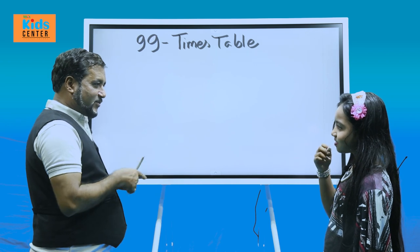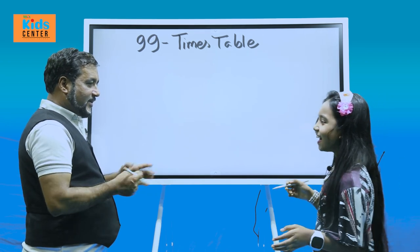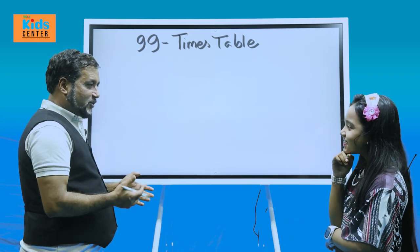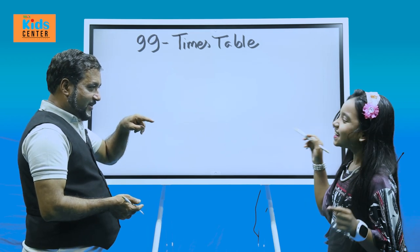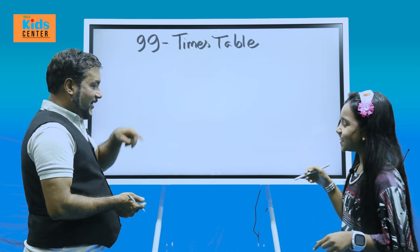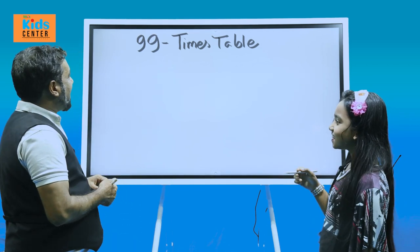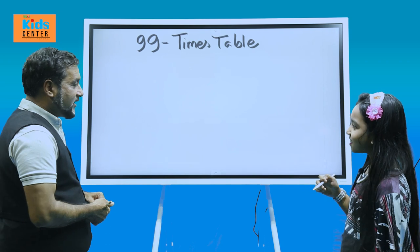Got crazy? 99 times table? Yeah. The whole Bangladesh, they learn only up to 19. And you're talking about 99. Yeah. Are you sure? Yeah, I'm sure. Okay. So, let's see how magically we can do this.